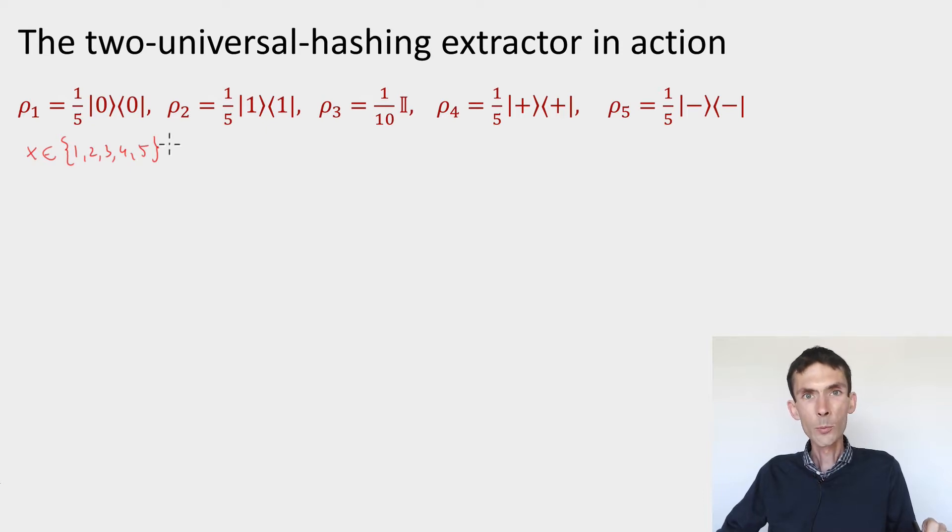Here there's five possible inputs so it's natural to think of them as elements of the finite field F5. In this case we need to design a family of two-universal hash functions from F5 to the output of the extractor, and we saw an example of such a family: we can take the set of all f which map x to ax plus b where a and b are elements of F5.